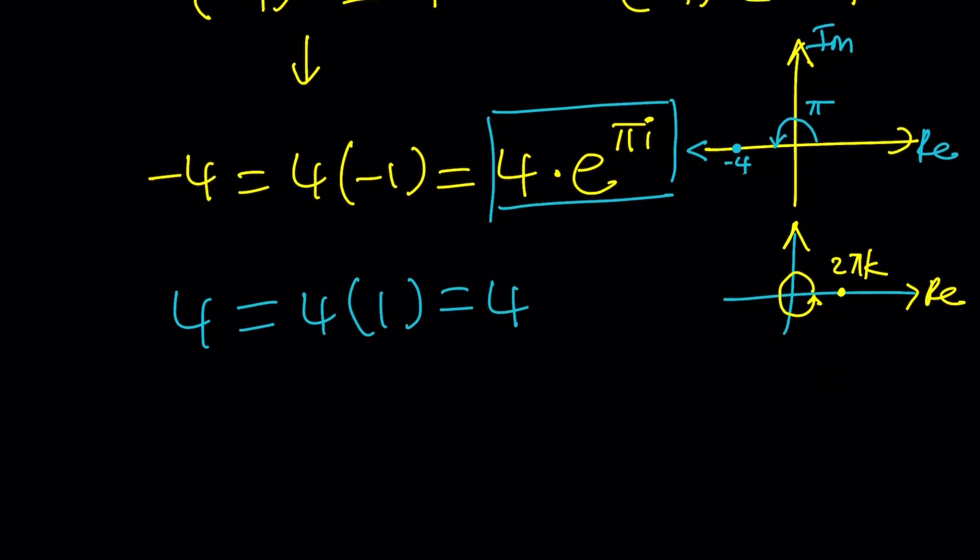So, 4 can be written as 4 times e to the power 2 pi k, which is a multiple of 2 pi, multiplied by i. Okay? By Euler's formula, you can basically write any complex number as r times e to the i theta,